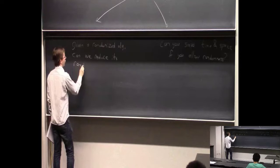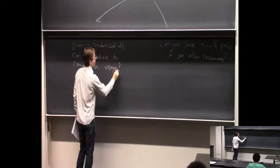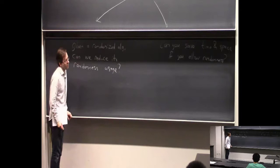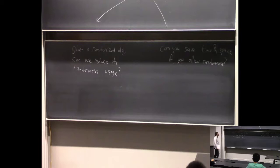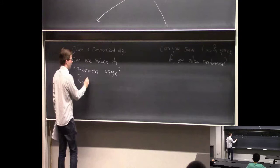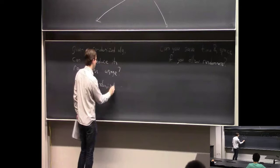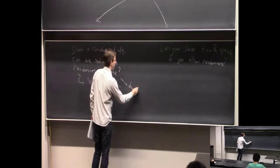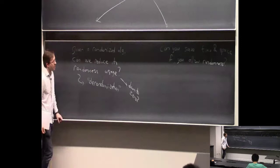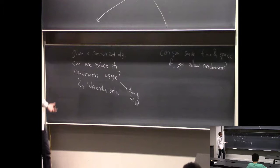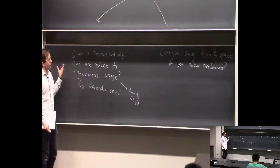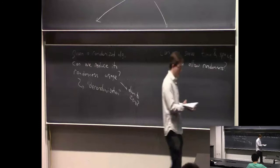If you feel that random bits are a precious resource you might want to conserve — which is sort of true, in the sense that it's hard in real life to get truly random bits — you might want to minimize them. This general task is called de-randomization. You might even try to minimize them all the way down to zero: take your randomized algorithm and make a non-random version of it that has approximately the same qualities — about as fast, about as much space usage, solves the same problem.